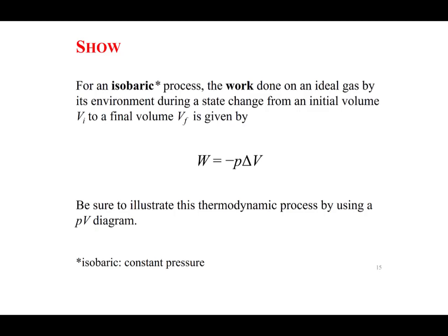Let's show that for an isobaric process, the work done on an ideal gas by its environment during a state change from an initial volume to a final volume is given by the negative of the product of the gas's pressure and its change in volume.